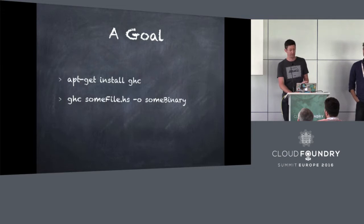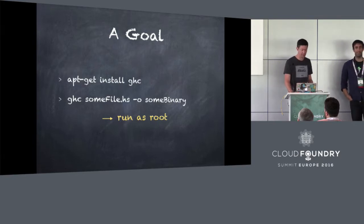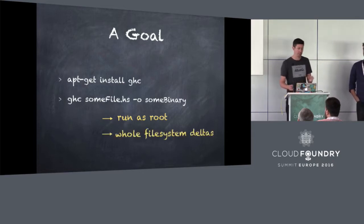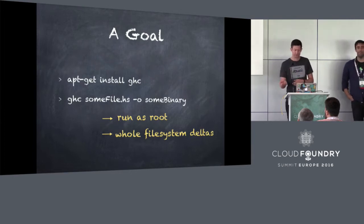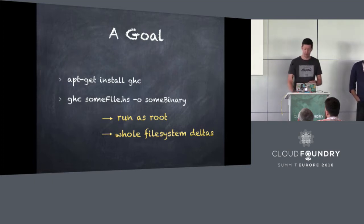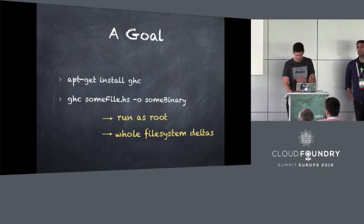There are reasons that this doesn't work today. For one thing, apt-get needs to be run as root. We have unprivileged containers now and we could start doing that, but we don't today. That leads to another problem: once you're running as root and running things like apt-get, you could be putting things anywhere in the file system, and those things your app might depend on at runtime aren't going to make it into the droplet. The droplet today is just tarred up from one particular directory.